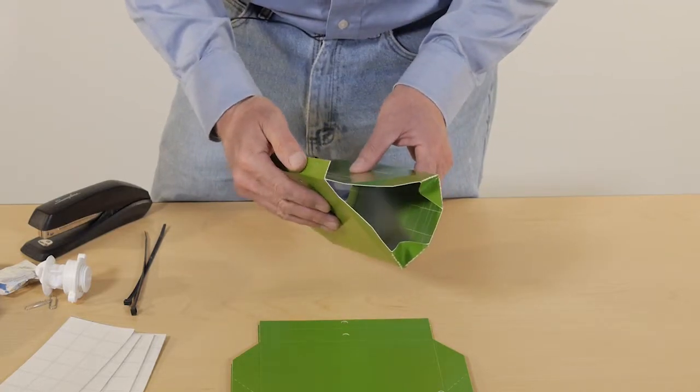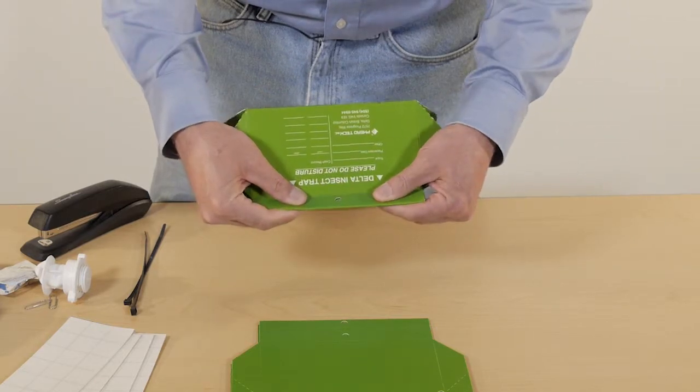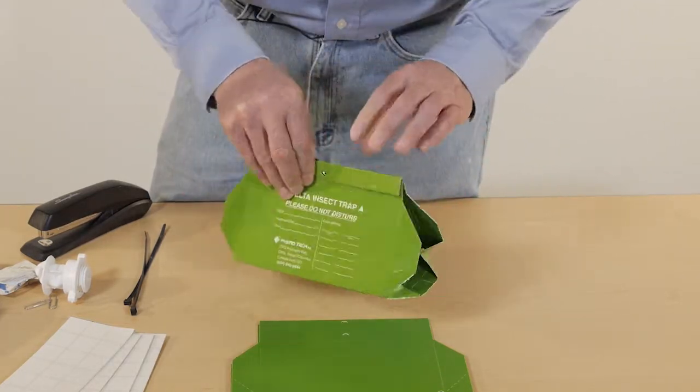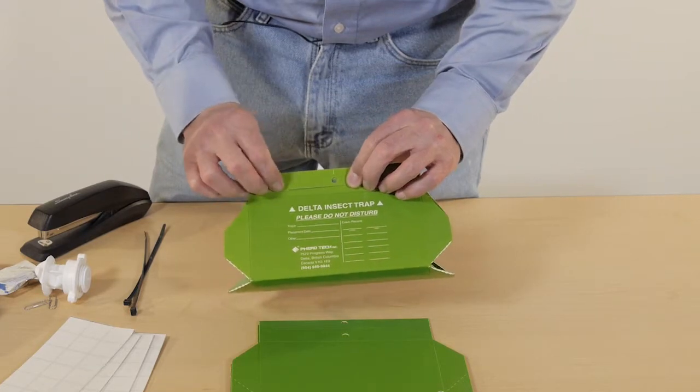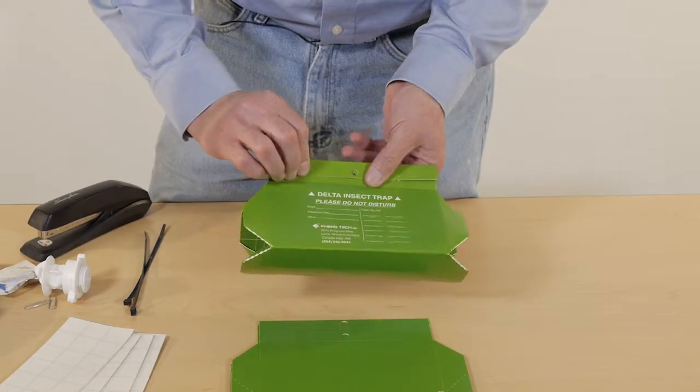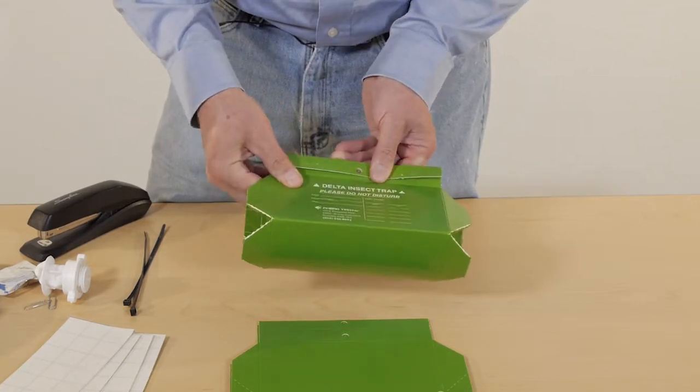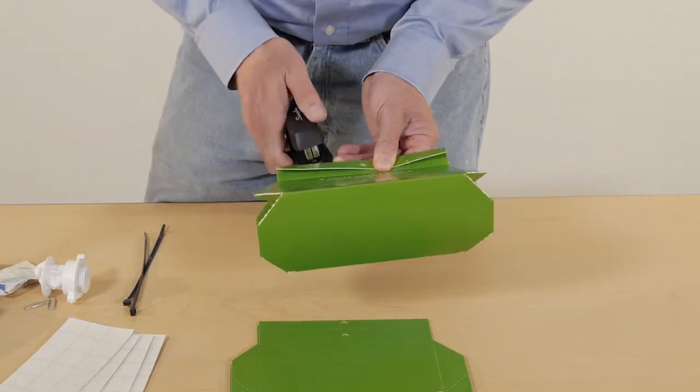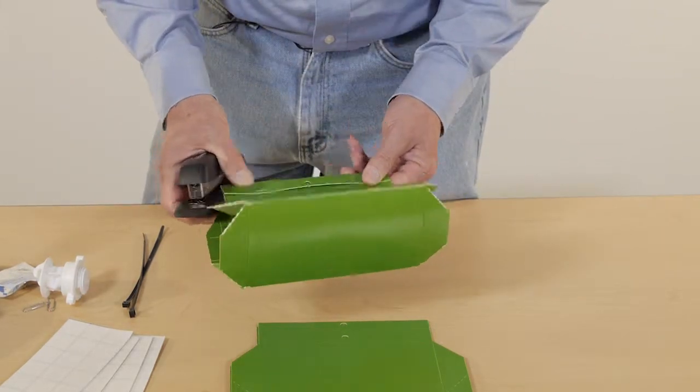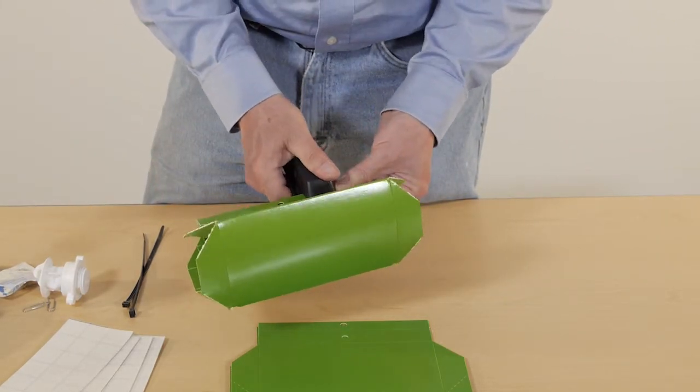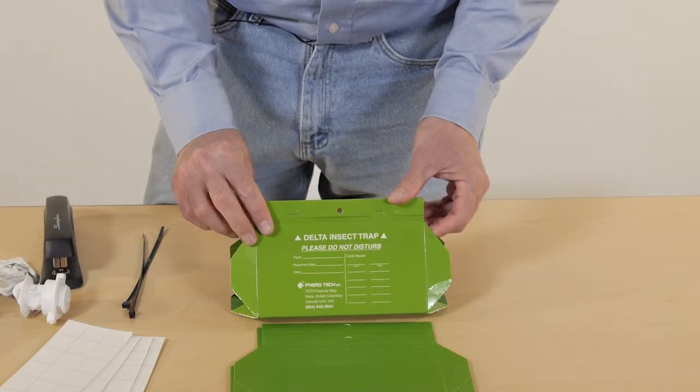The first thing we have to do is actually get the top put together properly and you'll want to make sure that the holes line up perfectly because that's where you're going to hang the trap off of. Once you get it to that point, get that hole nicely lined up and you just take a stapler and staple that closed. Now that's ready actually to put the lure into.